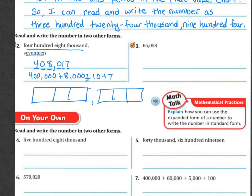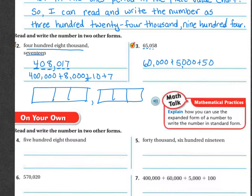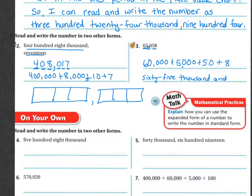Let's do the next one together. The expanded form is: sixty thousand plus five thousand. There's nothing in the hundreds, but there's a five in the tens, so that's fifty, plus eight. So there's my expanded form. When I write it out: sixty-five thousand — there's my comma — and fifty-eight, because there's nothing in the hundreds.